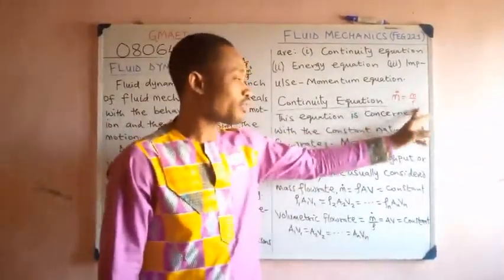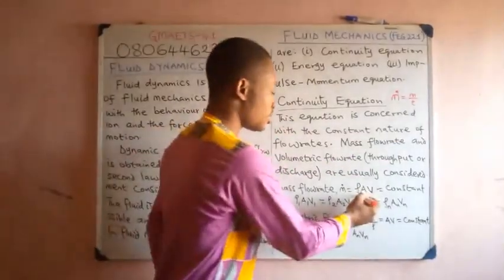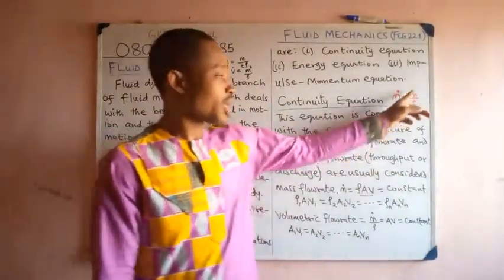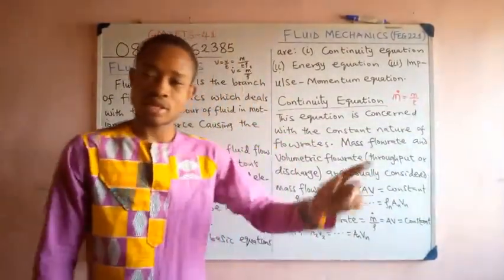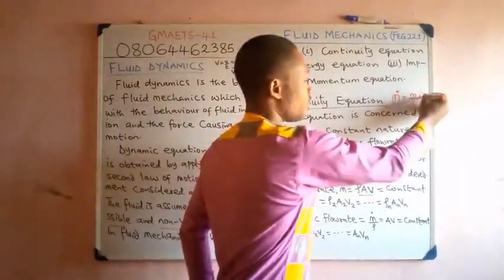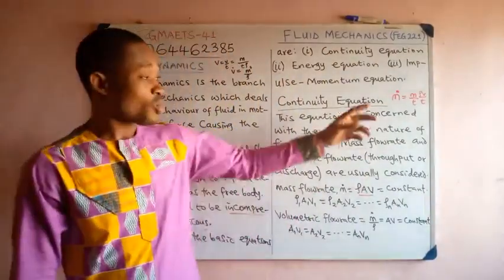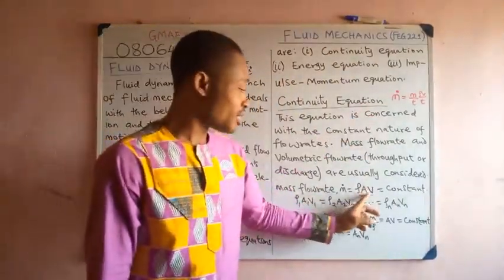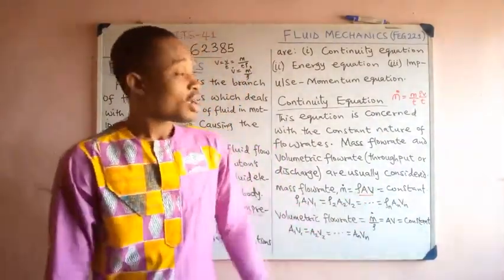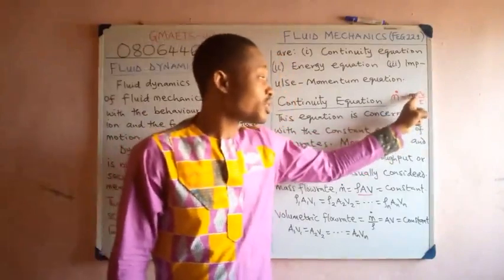If we have this as the mass flow rate equation, we can work on it to get ρAV. We know that mass is density times volume, so if you replace mass with density times volume divided by time. Note: this V here is velocity, while V here is volume because it's obtained from mass equals density times volume.